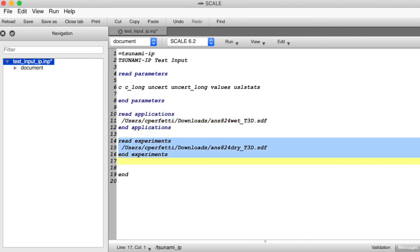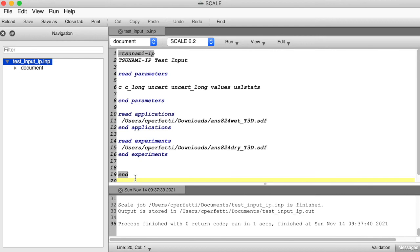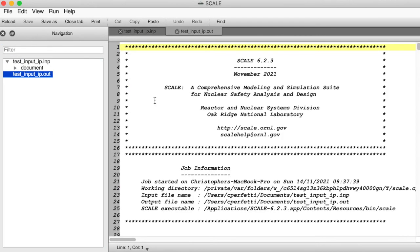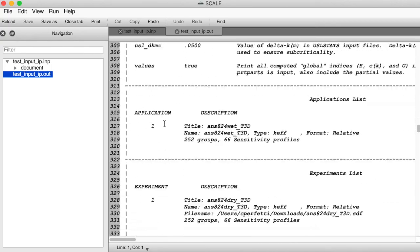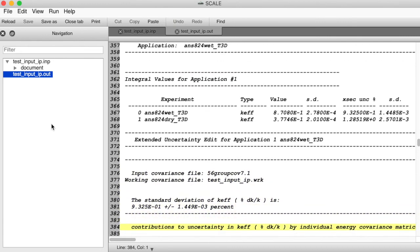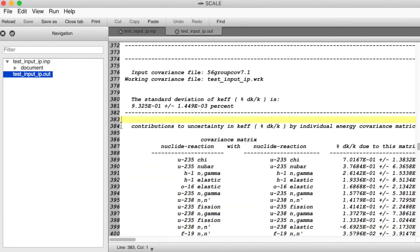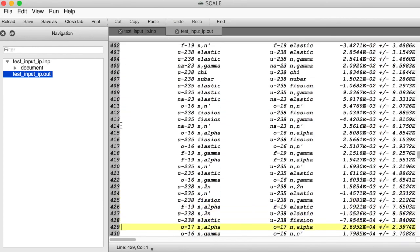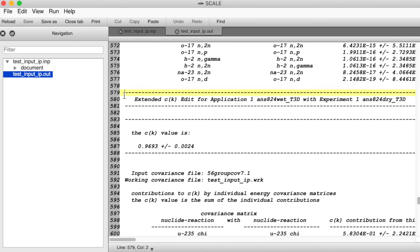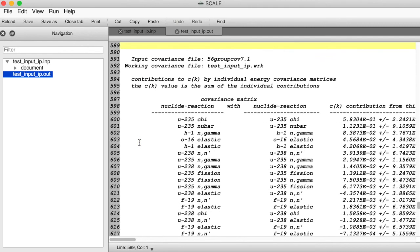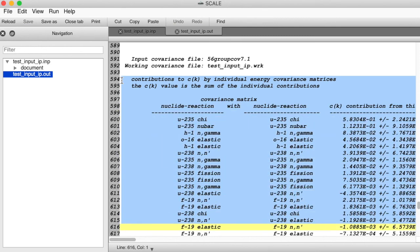When we run this tsunami IP code, we can open up its text output in Fulcrum, and we can scroll down to find the uncertainty propagation information, the similarity coefficients, the components of the similarity coefficients in the long output, and any other similarity metrics.